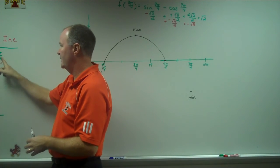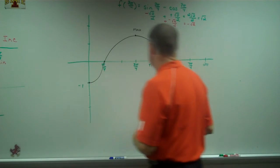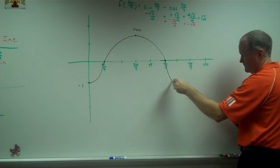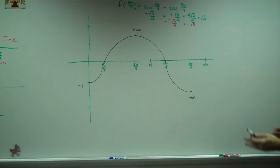Then from 5π over 4 to 7π over 4, decreasing and concave up. Like that. And then for the rest of the way, I'm increasing and concave up.